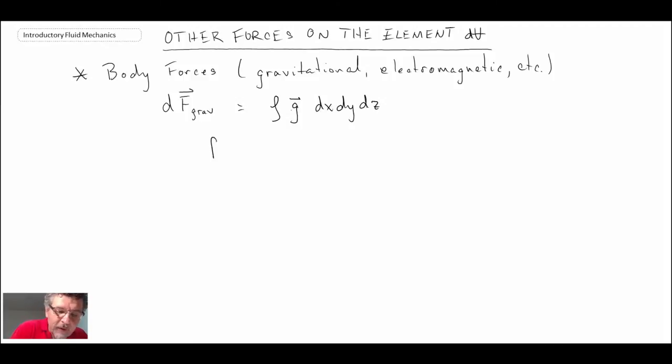And remember, before we were doing force per volume. So I will write that as a small f. And that would then just be ρ times the gravity vector g.